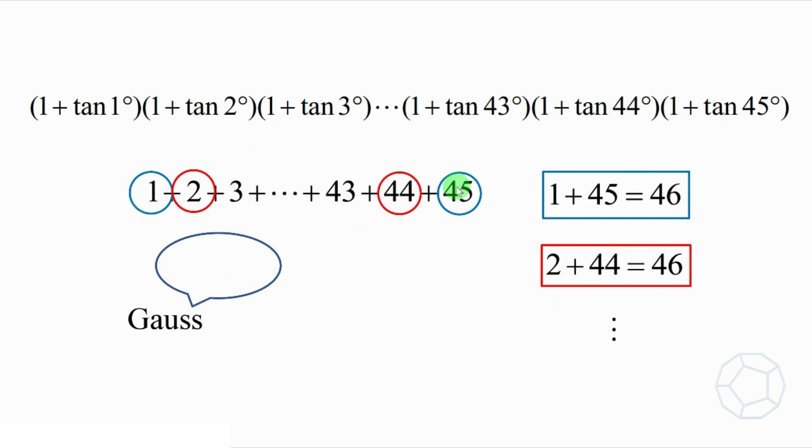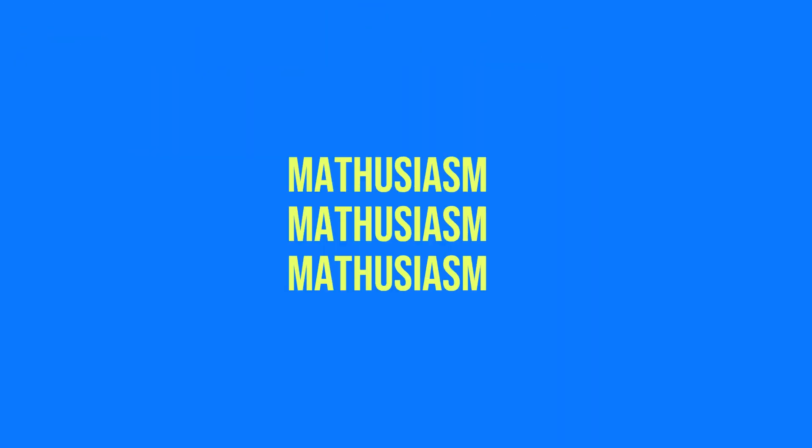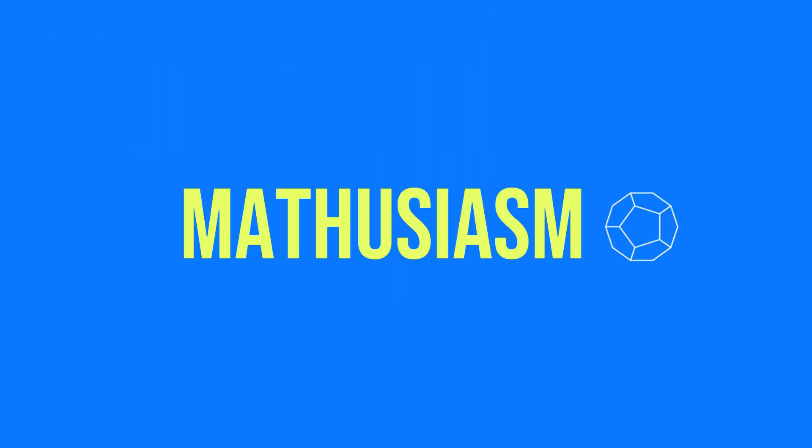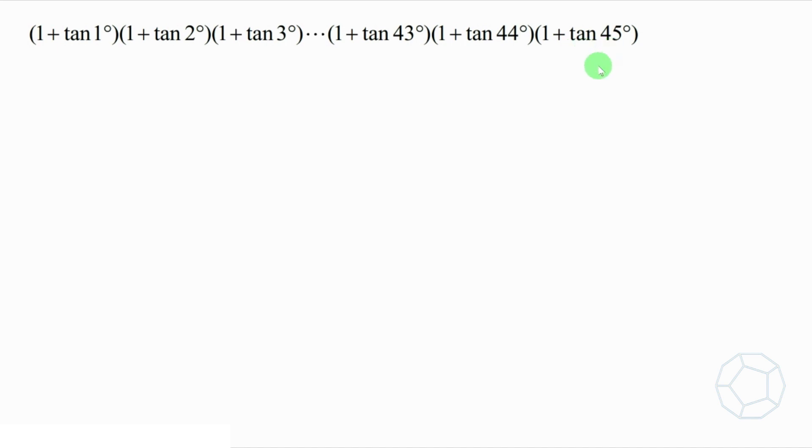Let's apply this strategy to the product as well. First of all, we note that tangent 45 degrees is a special value, which is 1. So the last bracket is equal to 2. Now we are left with 44 brackets only.